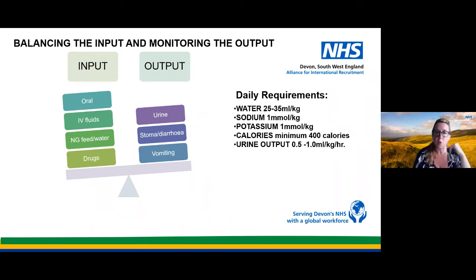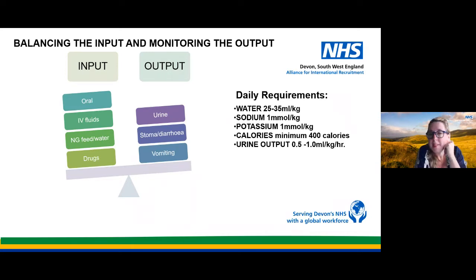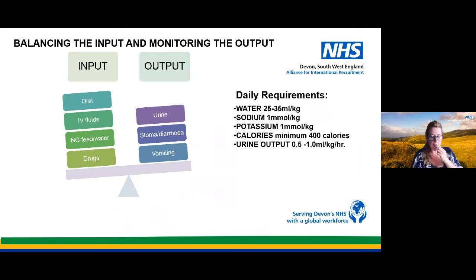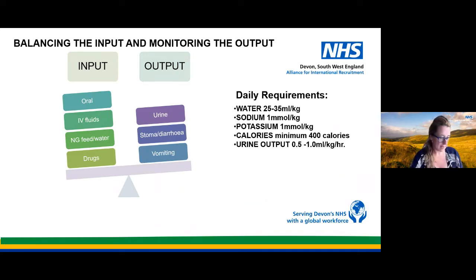Our daily requirements include sodium (Na) at 1 mmol/kg, potassium (K) at 1 mmol/kg, and a minimum of 400 calories. Our minimum urine output per person is between 0.5 and 1 ml per kg per hour, so we calculate that on an individual basis because everyone weighs slightly differently.